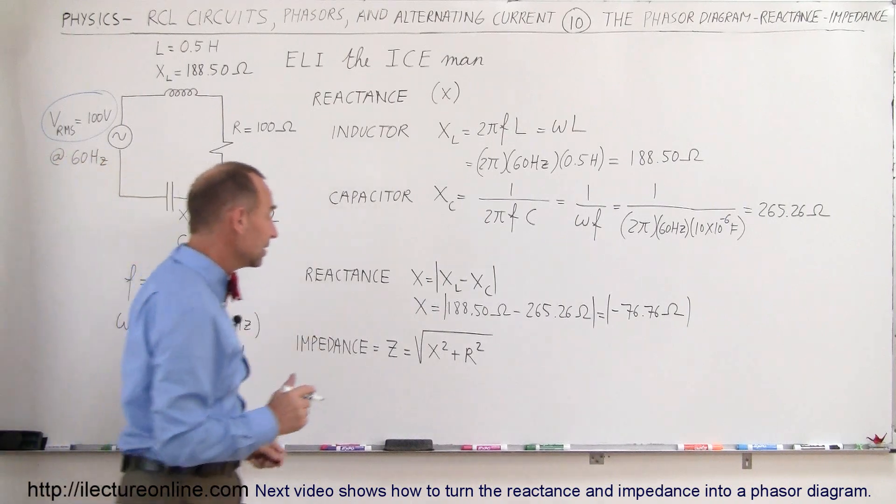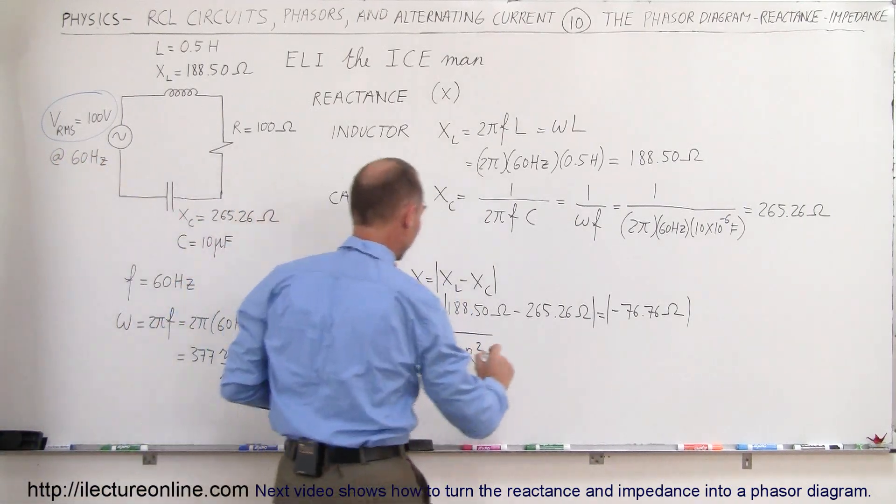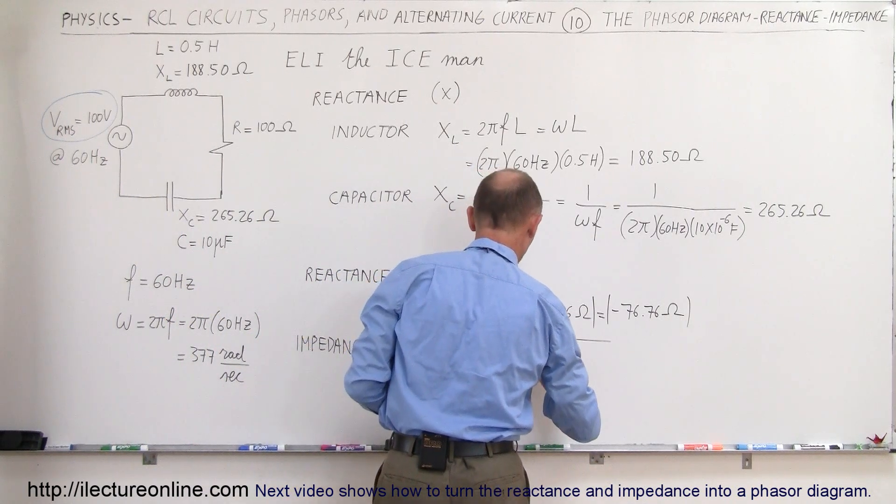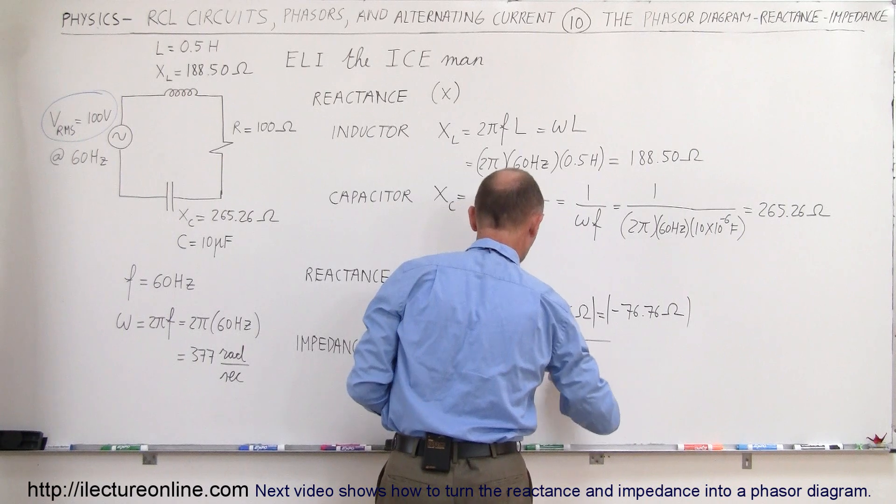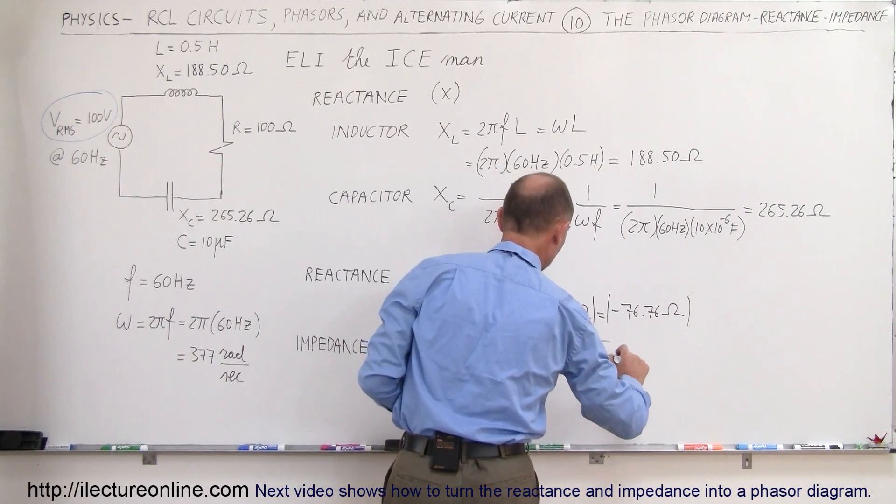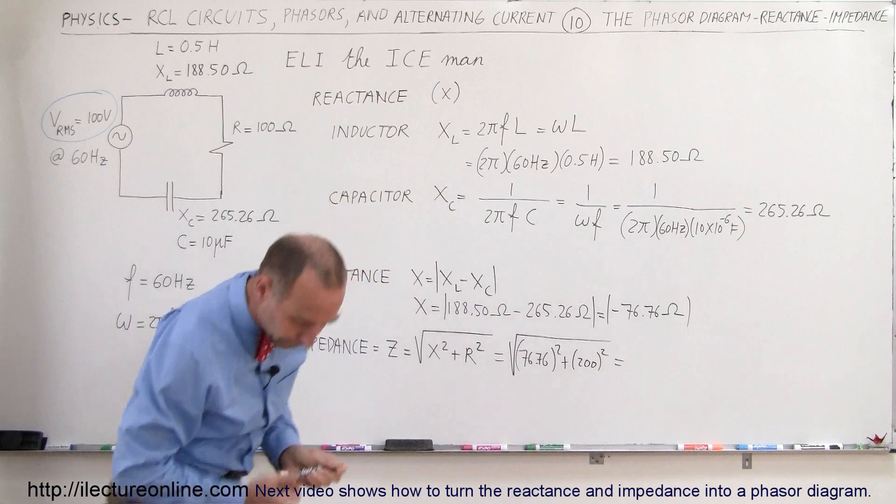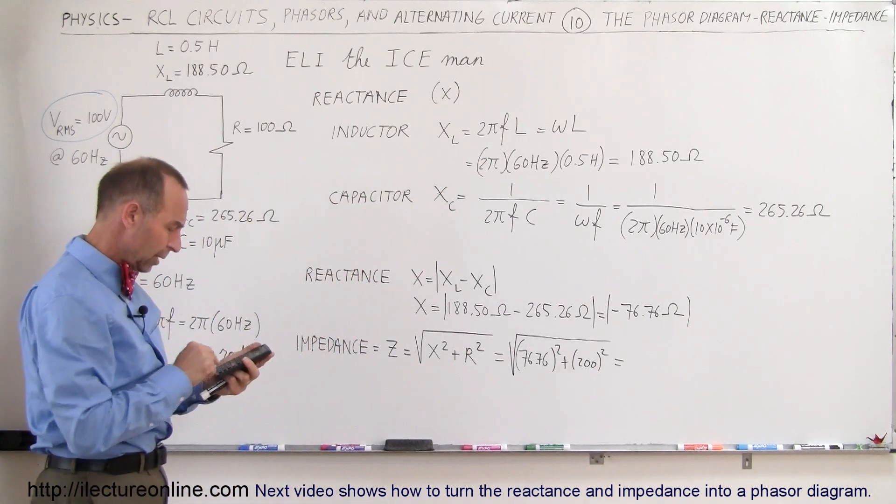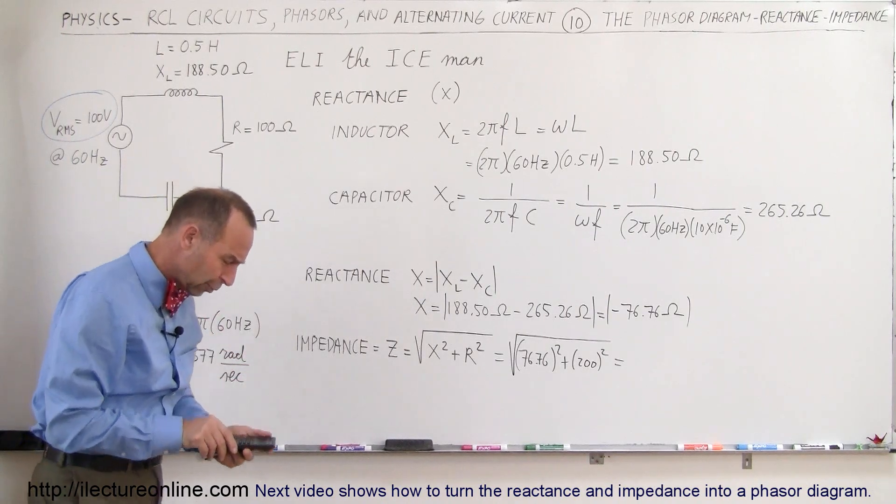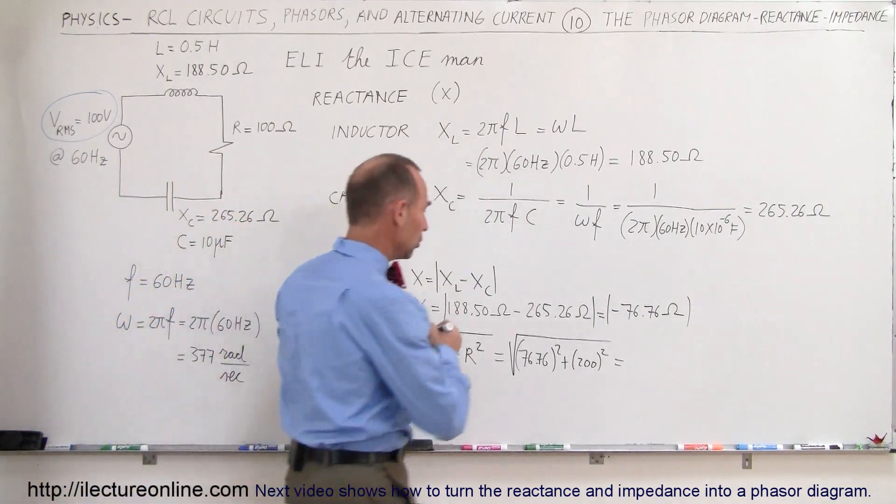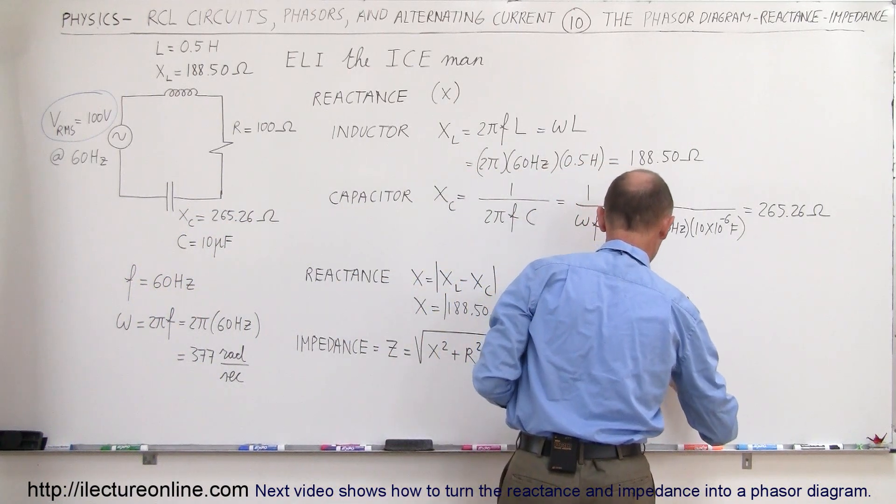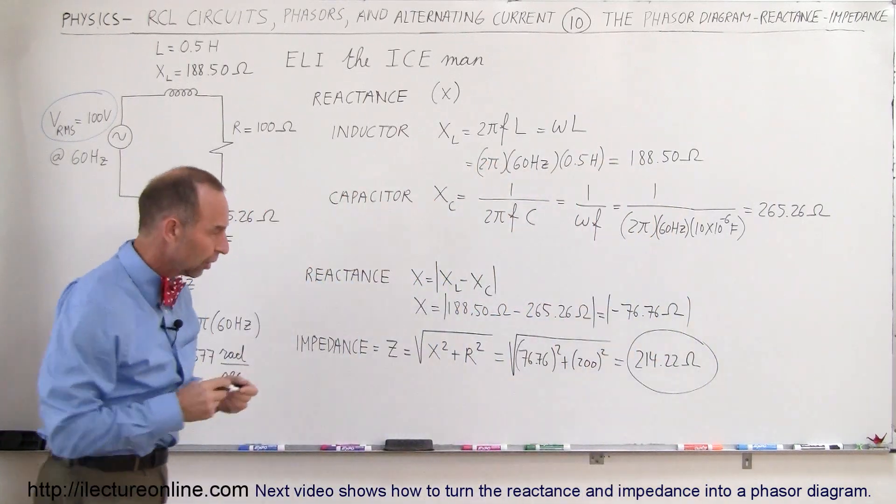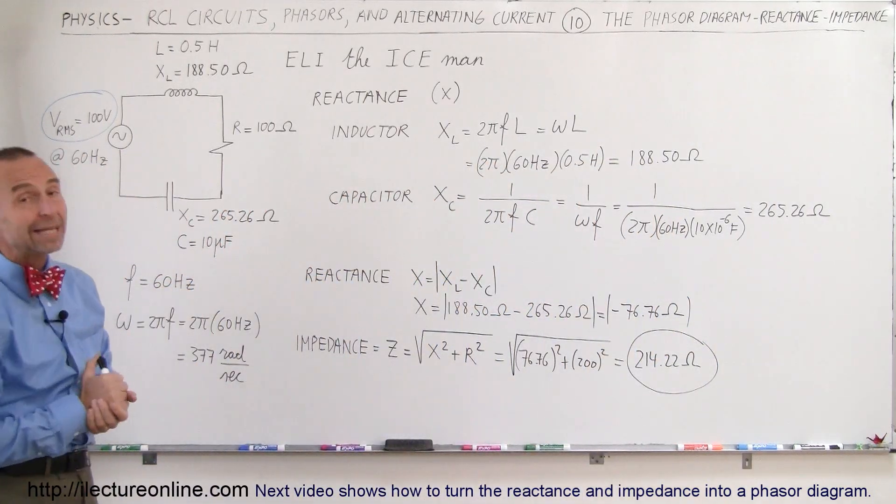Finally, we're going to find the impedance, the total opposition to the current by the whole circuit. We use Pythagorean theorem for that. That would be equal to the reactance, which is 76.76 ohms squared, plus the resistance squared. So here we square that, plus 200 squared, take the square root, and we get 214.22 ohms. And that would be the total opposition to the current in the circuit, which is called the impedance.